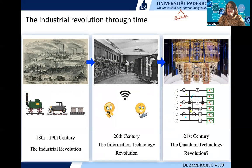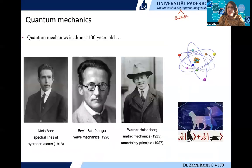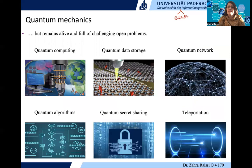Talking about time and quantum, you should remember that quantum mechanics is almost 100 years old. Many people worked in this area and they have a lot of discoveries. Because of their work, we know a lot. But even though quantum mechanics is almost 100 years old, it remains alive and contains a lot of open and challenging problems.